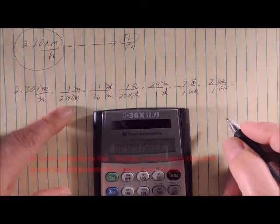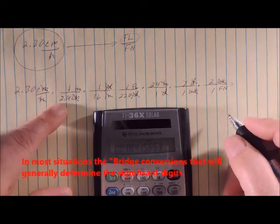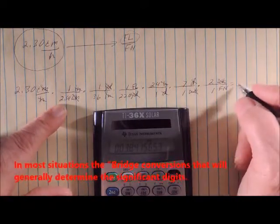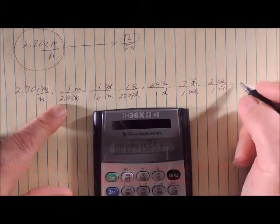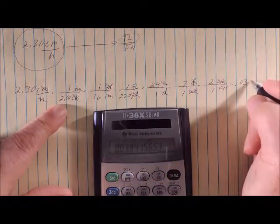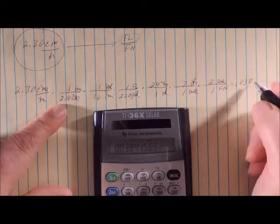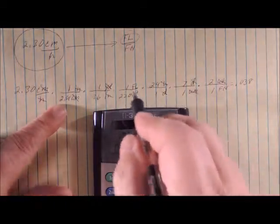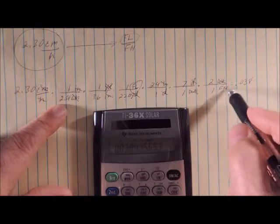And since we have three significant digits here, I can go .038. And that's going to be, watch carefully here, furlongs per fortnight.